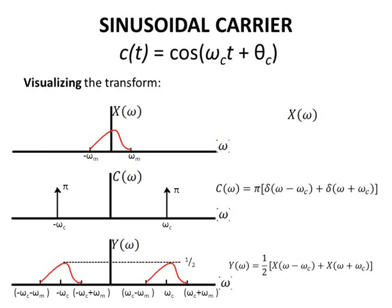Again, visualizing the transformation, at the top we have x of omega, which is simply the Fourier transform of x of t.